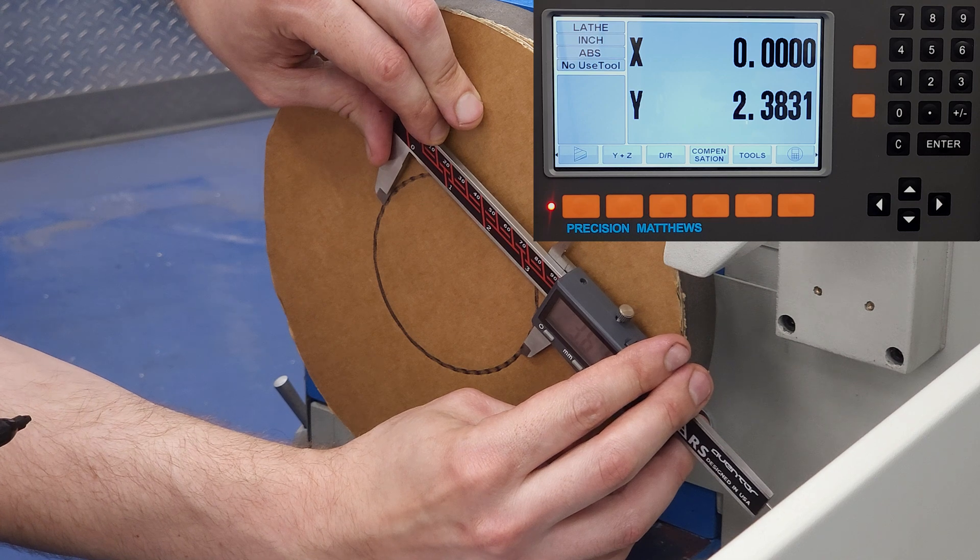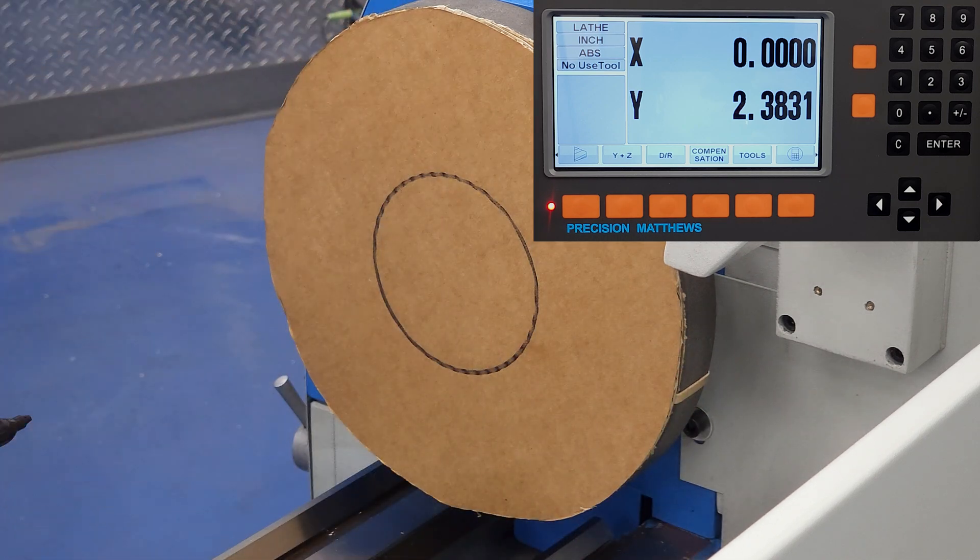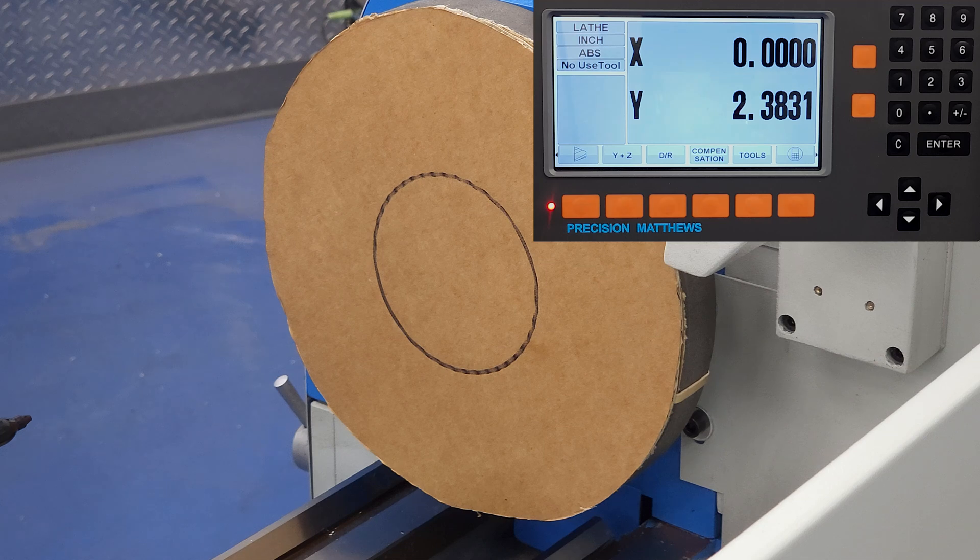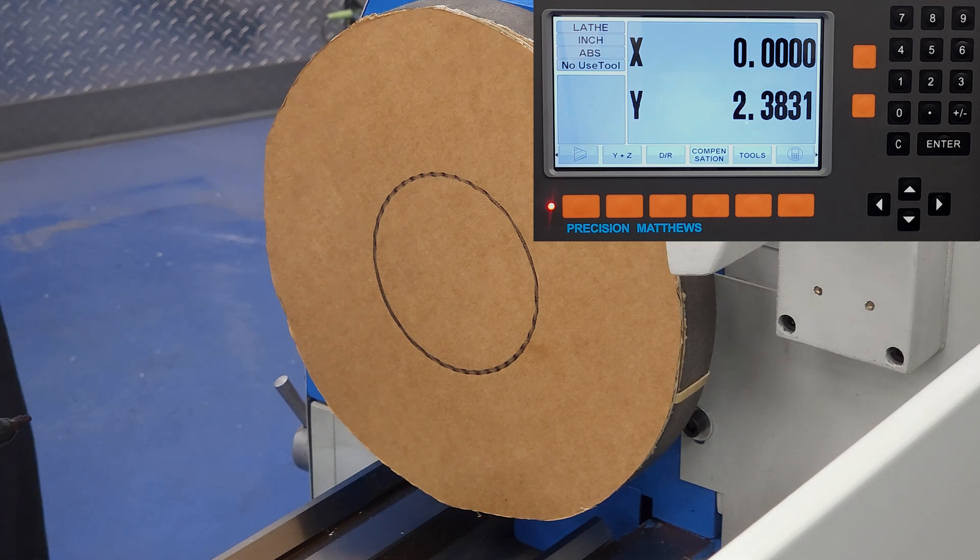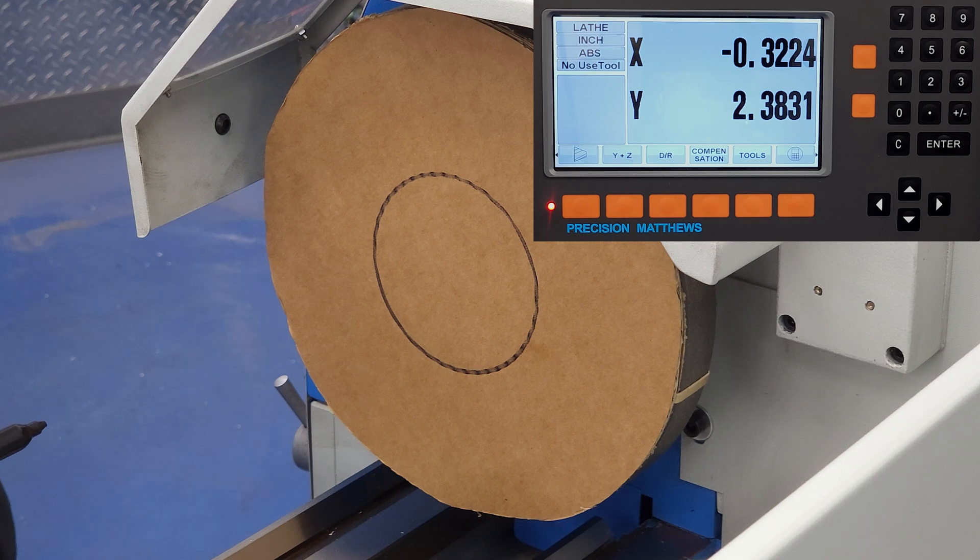This time, we're aiming for two inches, so we have 1.673 inches of material to remove. Now remember that we're measuring radius, so we need to cut that in half to get 0.8365, which is the amount that we need to move the cross slide in order to remove 1.673 inches of material.